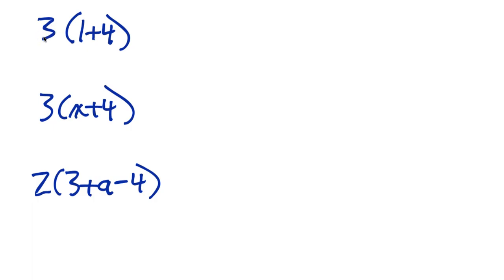When we distribute, basically we're distributing the number in front of the parentheses. This is going to be the 3, so it's going to be 3 times everything. You could think of this as 3 times 1 plus 3 times 4.